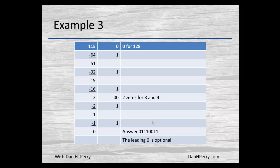Here's another one. With 115, it will not go into 128, so we've got a 0 for the leading or most significant bit. It will go into 64, so we bring down a 1. Subtracting that gives us 51. That will go into 32, so we bring down a 1, leaving us 19. That will go into 16, bringing down a 1, leaving us 3. That will not go into either the 8 or the 4.